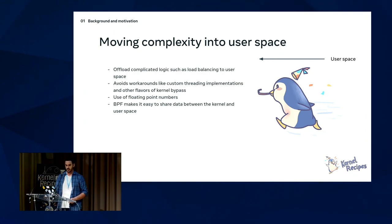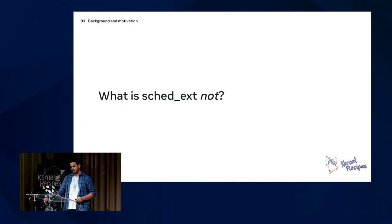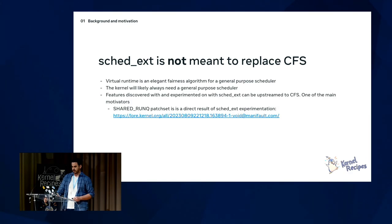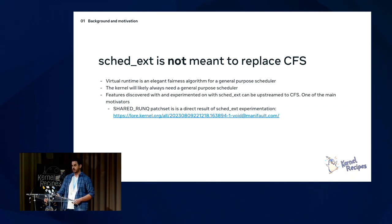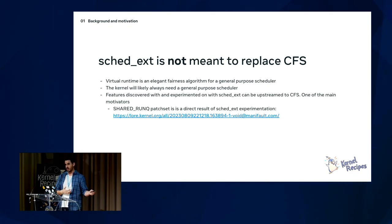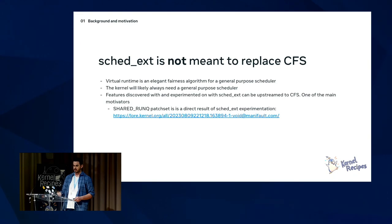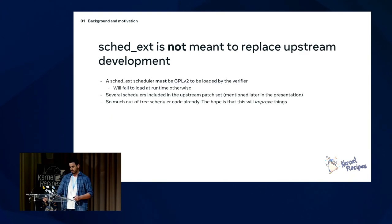Before talking about how to use sched_ext, I want to touch on what it is not. It's not meant to replace CFS — we always need a general-purpose scheduler. Fairness and VTime is an elegant way to do scheduling. We actually hope sched_ext will be used to enhance CFS, since it's much easier to test different policies and features with sched_ext than with writing kernel code directly. We're also not trying to stop or replace upstream development.